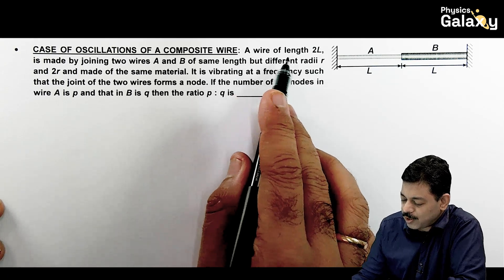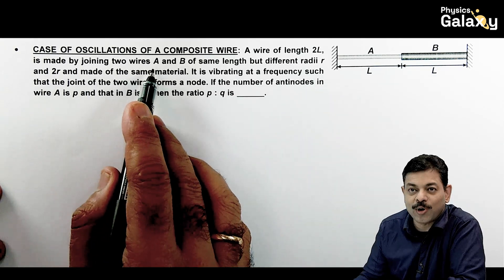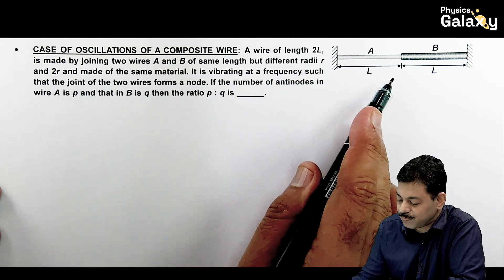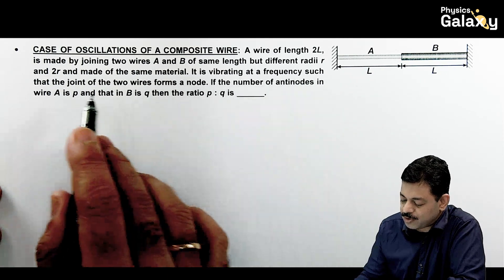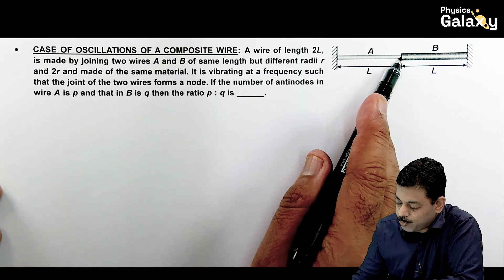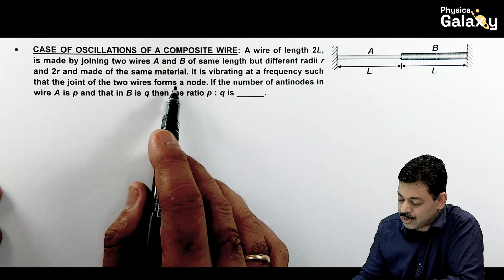If we see a wire of length 2L is made by joining two wires A and B of same length but different radii R and 2R made of the same material. Now it is vibrating at a frequency such that the joint of the two wires forms a node. The midpoint is where the two wires are joined, it has to be a node.